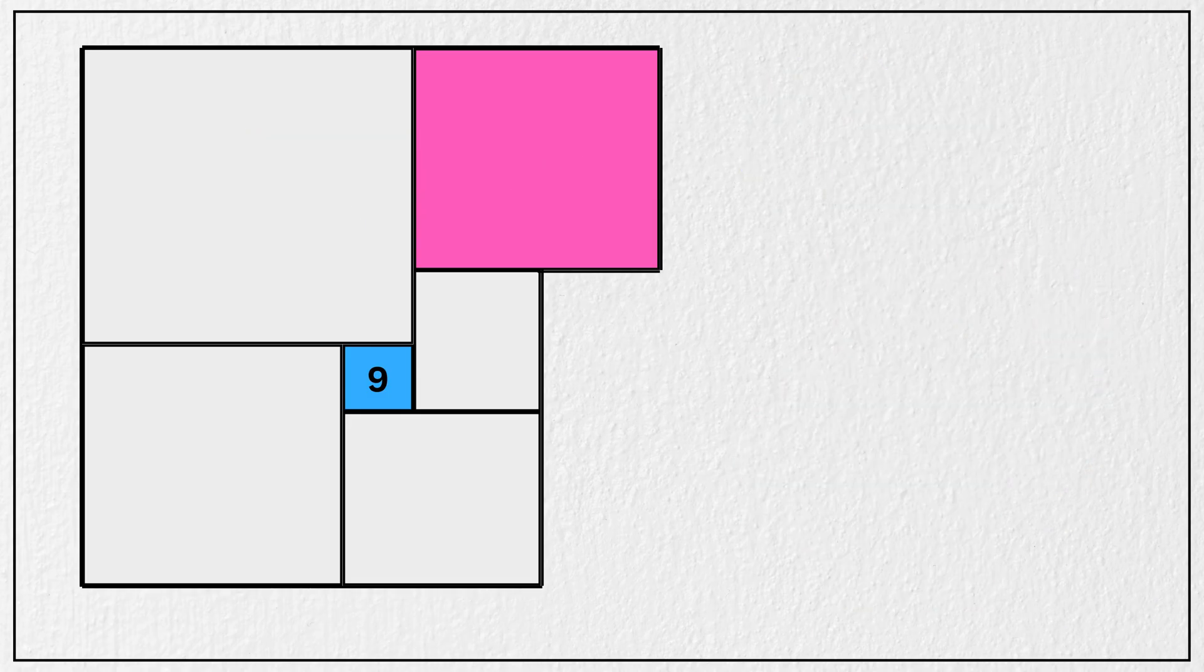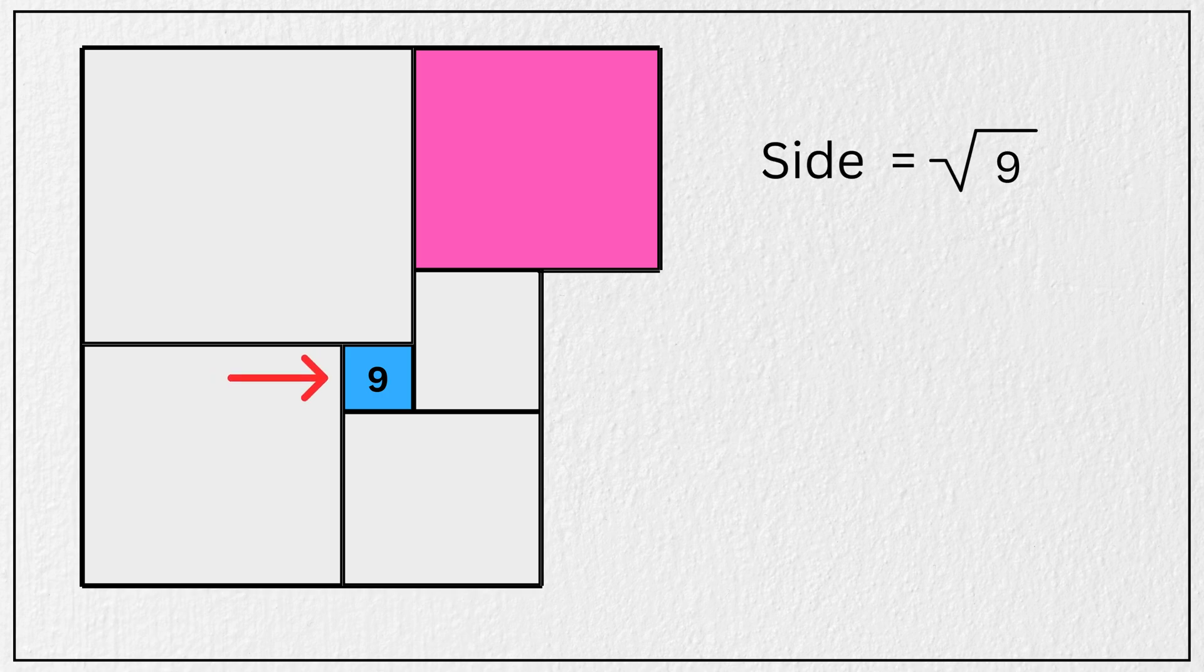Alright, let us solve it together. We are told that the area of this blue shaded square is 9 square units. That means its side length must be the square root of 9, which is 3 units. That means this length is 3 units and this length is also 3 units.